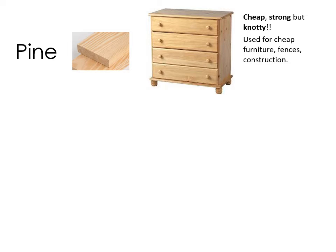These are the softwoods you need to know — you'll most likely just need to identify them in a multiple choice question or remember one property and one use. Pine is inexpensive and quite strong. It tends to be used for less expensive furniture, but it has a lot of knots — the little brown circular knots can cause issues when making things because they can fall out and be more difficult to work with. Uses include inexpensive furniture, fences, and construction.